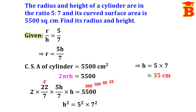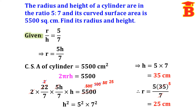Next we find the radius. Substituting H equal to 35 into R equal to 5H by 7: R equals 5 into 35 divided by 7. Canceling 35 and 7, we get R equal to 5 into 5, which is 25 centimeter. Therefore, height is 35 centimeter and radius is 25 centimeter.